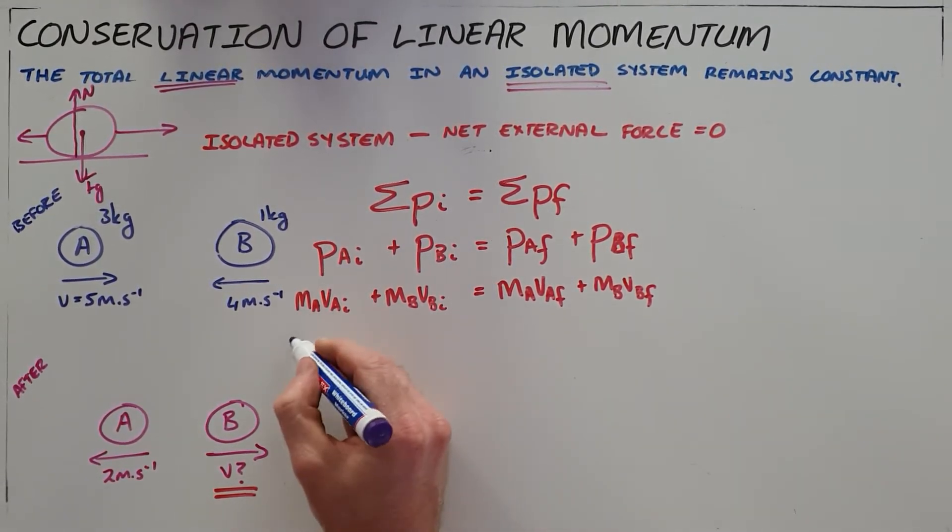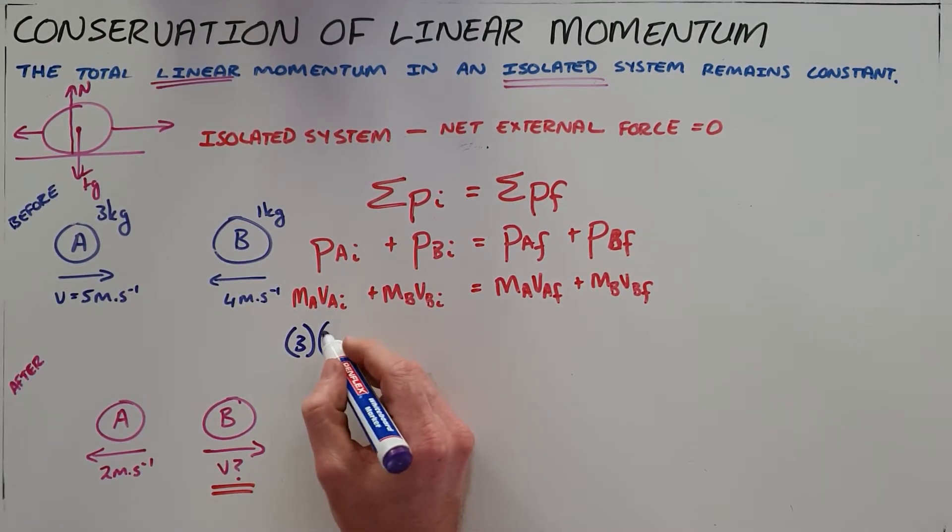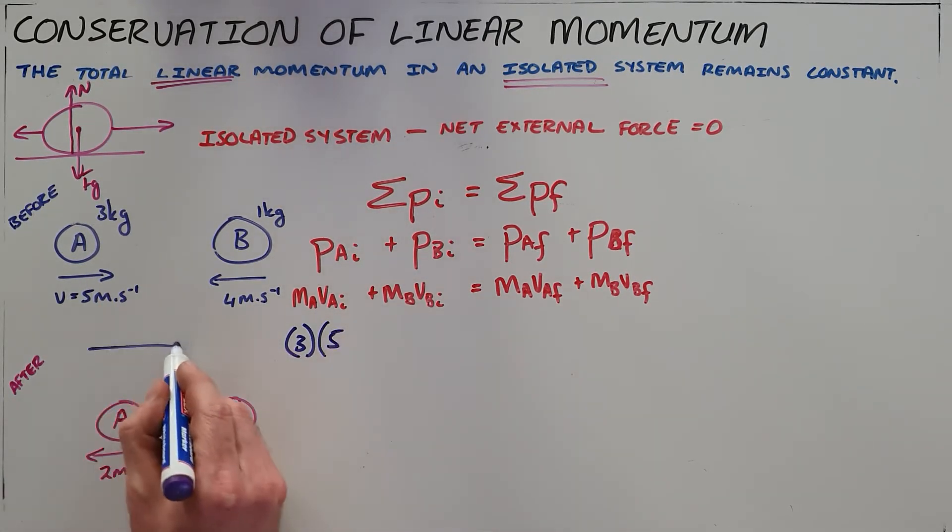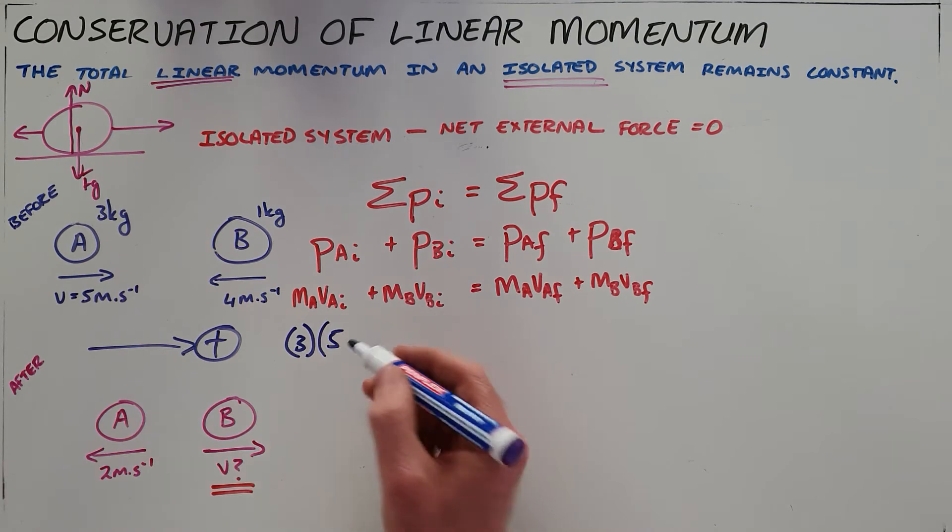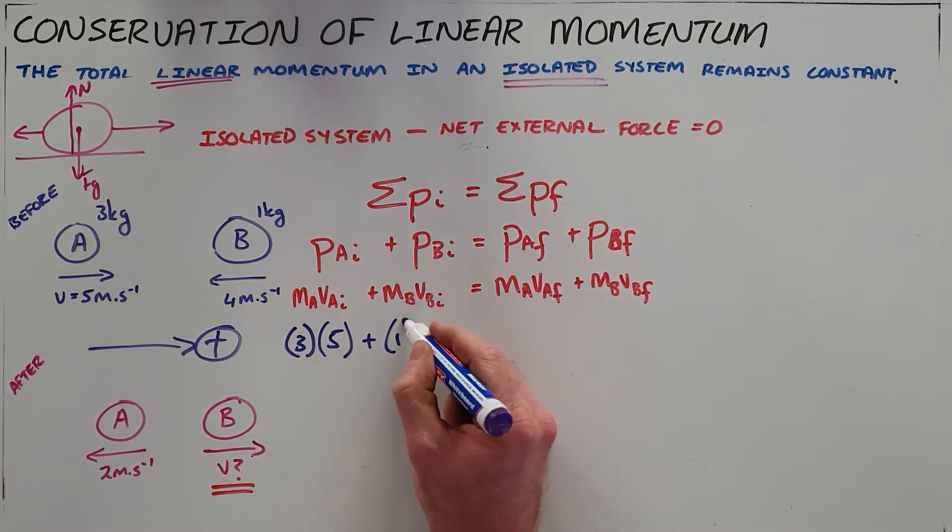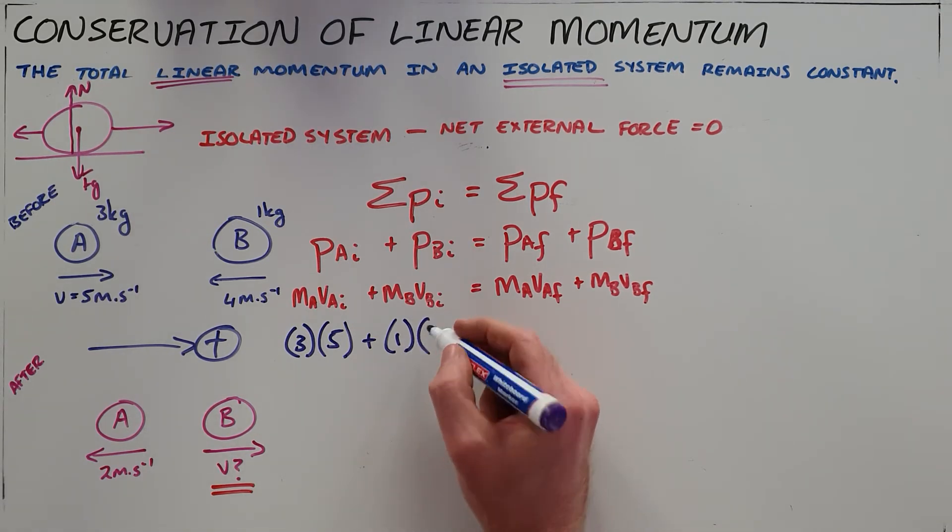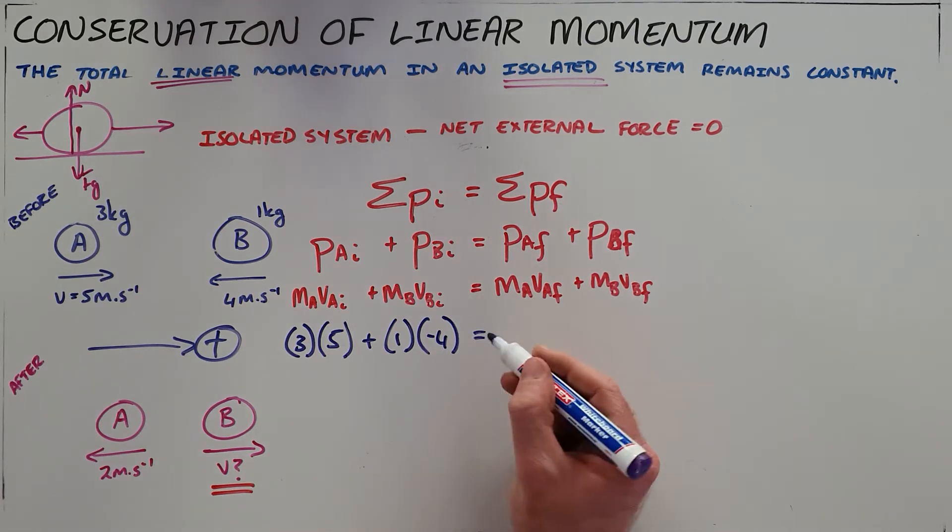The initial momentum of A can be found with a mass of A multiplied by the initial velocity, which we were told is 5. It's important to define a direction as positive because there are two directions possible here, so I have picked right as positive. Obviously that doesn't matter, you can choose left as well. The momentum of B initially has a velocity of 4 meters per second in a negative direction.